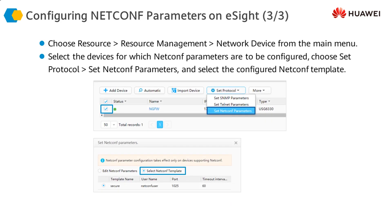Once we've added the devices and configured SNMP and NetConf, the first thing we should do is synchronize the data. This means the configuration and policy parameters on the firewall should be synchronized to the NMS as well, so that the NMS has all the firewall's configuration information stored locally. This way, the information can be changed if required. Data synchronization is the first step between the Secure Center and the firewall or firewalls.